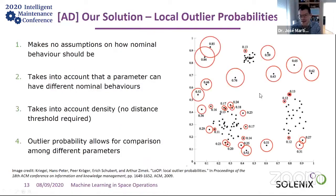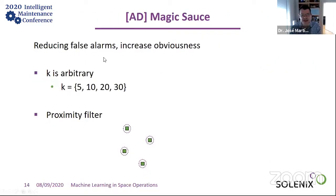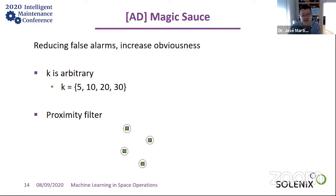Here is some magic sauce. The density estimation uses k nearest neighbors, and k is somewhat arbitrary — it could be 5, 10, 20, or 30. To reduce false alarms, we compute the density for all those values of k and only declare something unusual if it is unusual regardless of which k we use. This gives us confidence that it is a genuine anomaly before we show it to engineers.